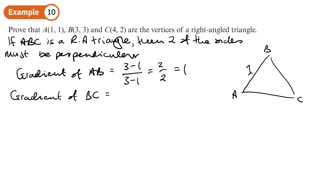Gradient of BC: we'll do the change in y over the change in x, so 2 minus 3 over 4 minus 3. We get negative 1 over 1, so BC has a gradient of negative 1. We don't need to do any more because AB and BC are perpendicular, but I'll carry on anyway. The gradient of AC: 2 minus 1 over 4 minus 1 gives me a gradient of 1 over 3, so it's got a gradient of a third. So the right angle must be up here.